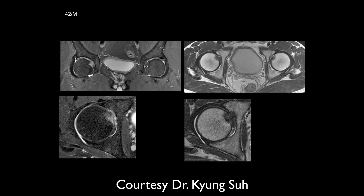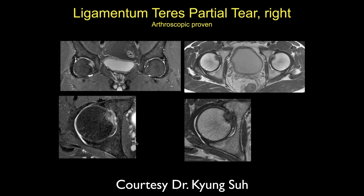In the next case, there is thickening and edema involving the ligamentum teres on the right side. There is also reactive bone marrow edema adjacent to it. This appears to be an acute tear or partial tear of the ligamentum teres.